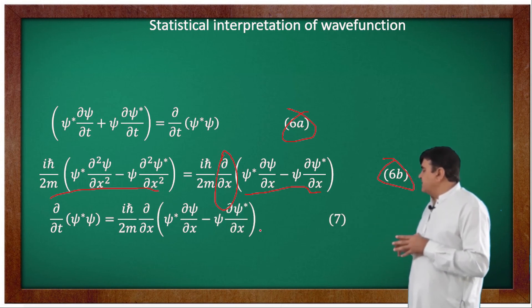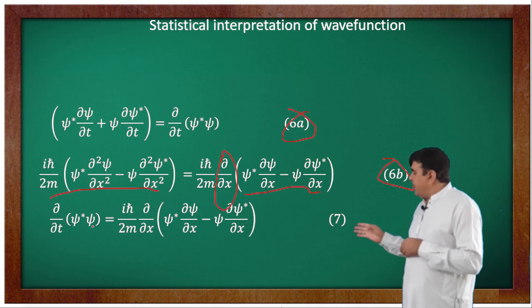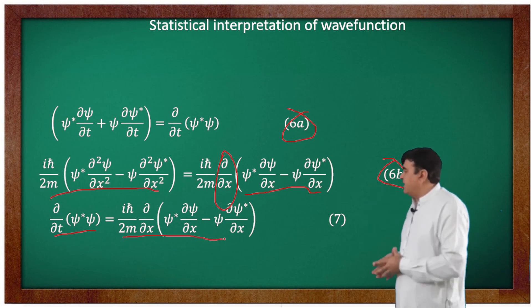That is the differential of the product of psi steric psi on the left and the other quantity iota h-bar divided by 2m partial over partial x and the whole quantity inside the bracket.